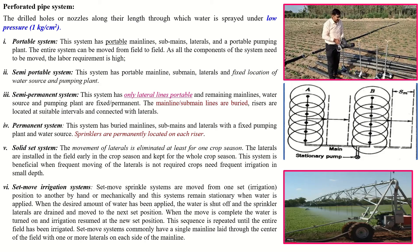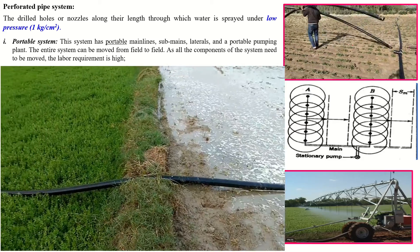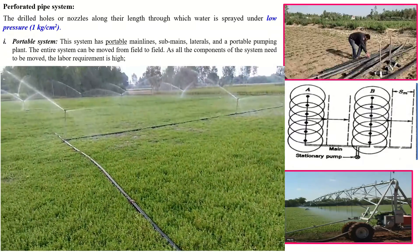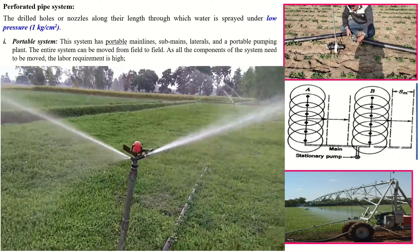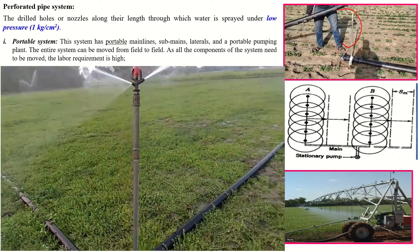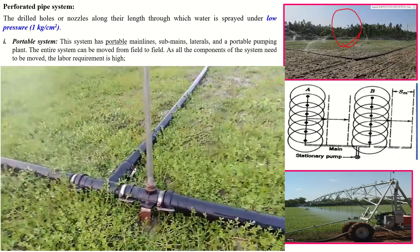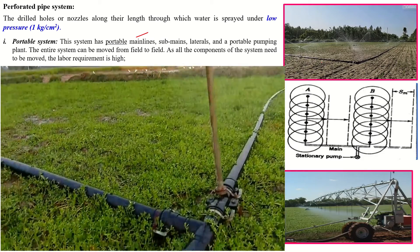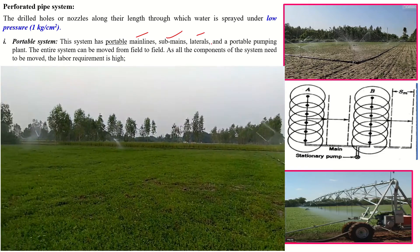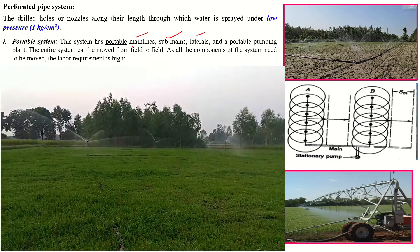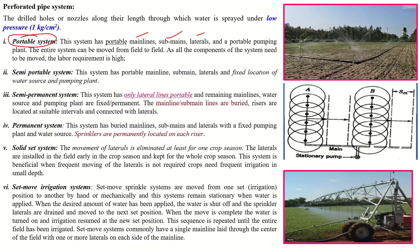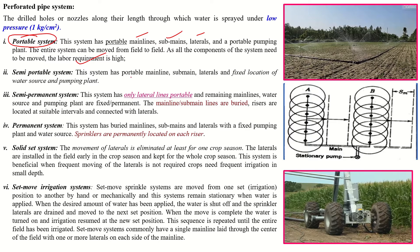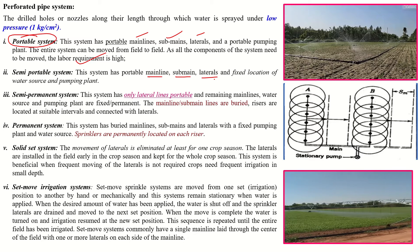In the portable system, the entire system — water source, main, sub-main, and laterals — is portable and can be carried from one place to another, as shown in this picture. The main lines, sub-mains, and laterals including the riser and sprinkler are all moved. This system requires higher labor because we need to carry all components from one place to another.